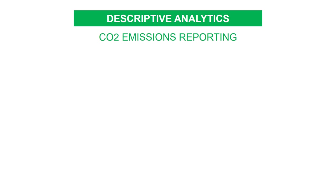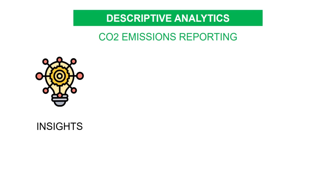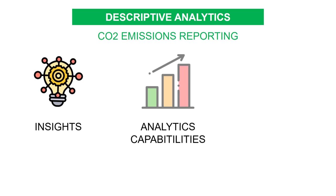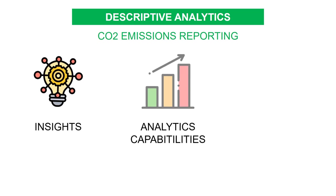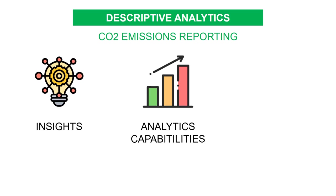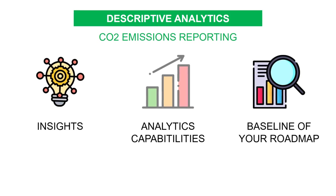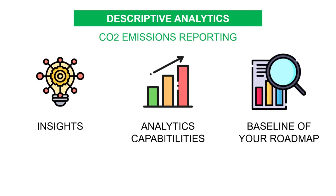With this dataset, you have a rich source of information to generate insights about the footprint of your distribution network and implement a set of metrics to monitor your performance — for instance, the kilogram of CO2 per unit sold and the number of pallets per delivery. You can then start to set your baseline.